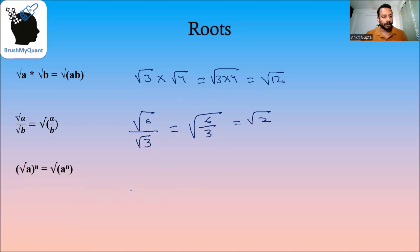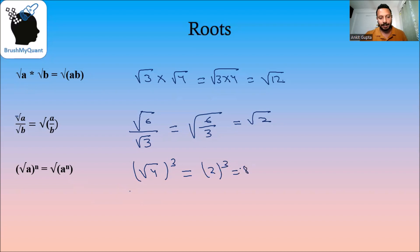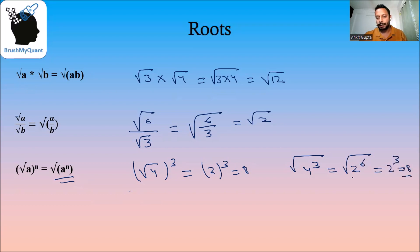(√a)^n is equal to √(a^n). For example, (√4)³ — we know √4 = 2, so 2³ = 8. On the right-hand side, √(4³) = √(2⁶) = √(2³ · 2³). This also equals 8. So (√a)^n = √(a^n) is confirmed.